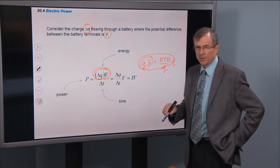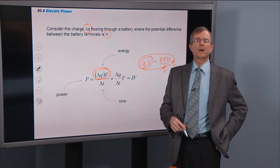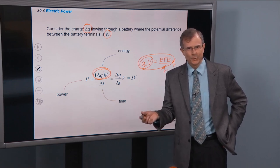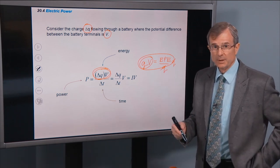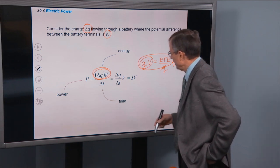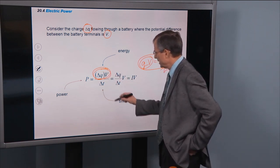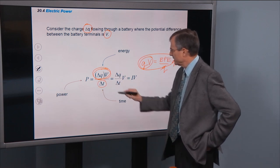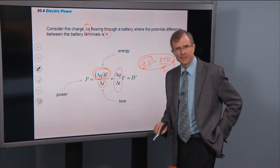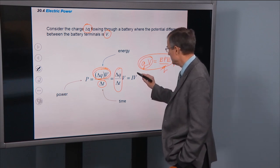But power is energy divided by time. If you remember back from last semester, physics 2010. So energy divided by time gives power. Well the energy is this, the delta time is here, but you already know what delta Q divided by delta T is. It's I, the current.